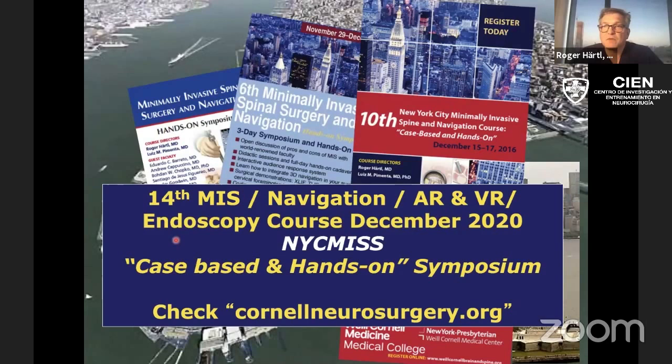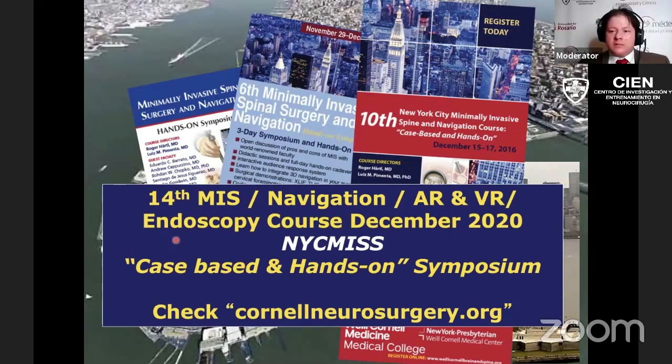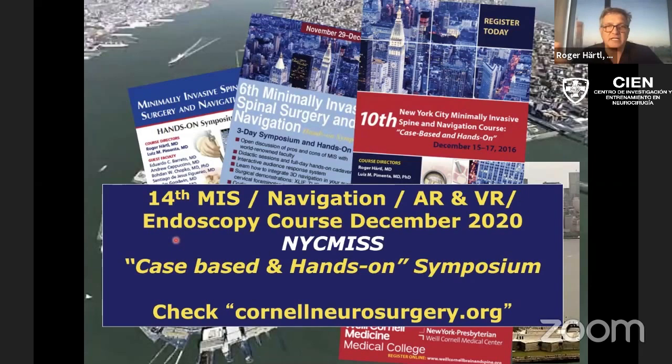Question: Do you have any specific T-score upon which you definitely do not operate? No, there's no particular absolute number. I look at the CT scan, I look at the scores, and I look at the overall indication for surgery. I have a low threshold to postpone surgery if I get the impression that the risks outweigh the benefits. I kind of look at the ballpark number — the cutoff is around minus 2.8 — and try to make a rational decision, but there's not one absolute number I use.